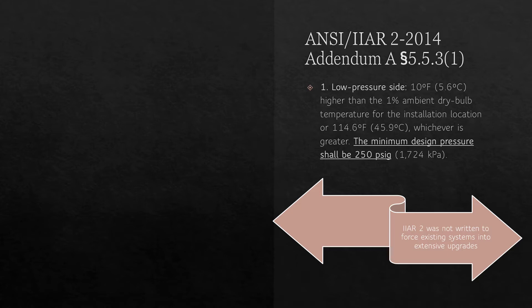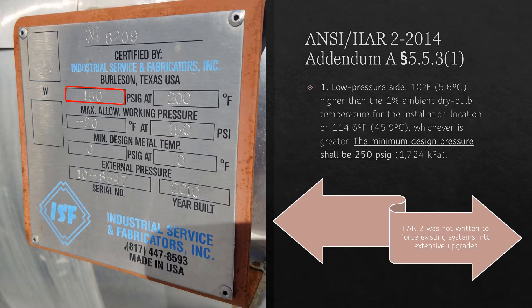For example, the 2014 version of IIAR Standard 2 increased the minimum allowable design pressure of the low side of a system to 250 PSI. However, many systems designed prior to that date utilized low side components that were designed for 150 PSI. While it was never IIAR's intent that Standard 2 be used to forcibly require extensive upgrades to existing systems, many such instances have occurred.